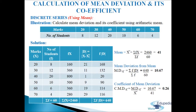Frequencies already given are 8, 12, 20, 10, 6, and 4, so sigma f = 60. In the third column we write f·x — the product of frequency and variable: 20×8=160, 30×12=360, 40×20=800, 50×10=500, 60×6=360, 70×4=280, giving sigma fx = 2460. Mean = sigma fx / sigma f = 2460 / 60 = 41.